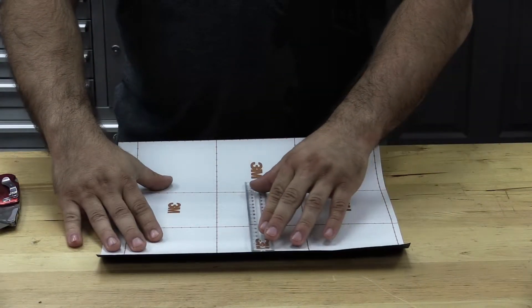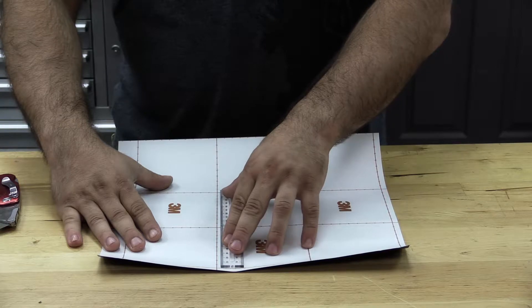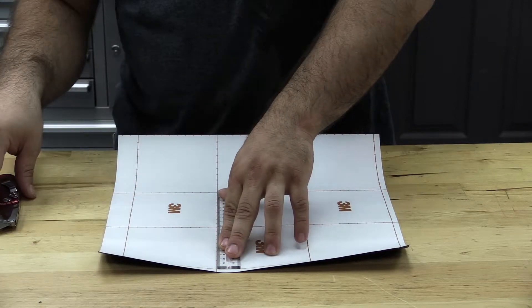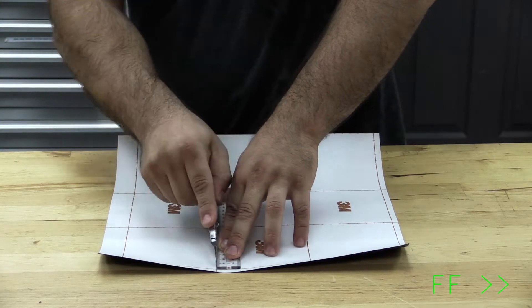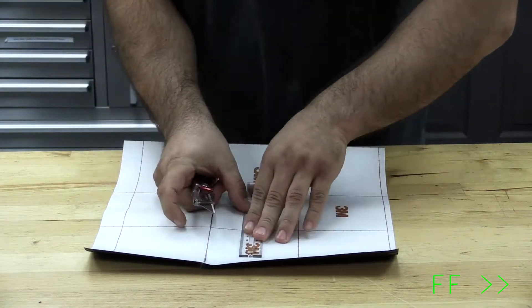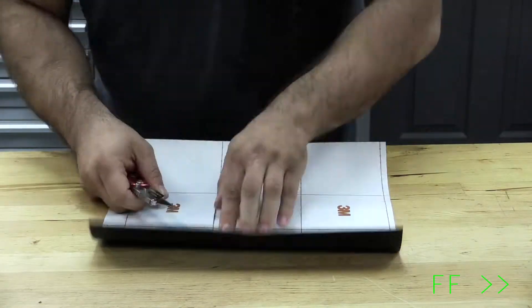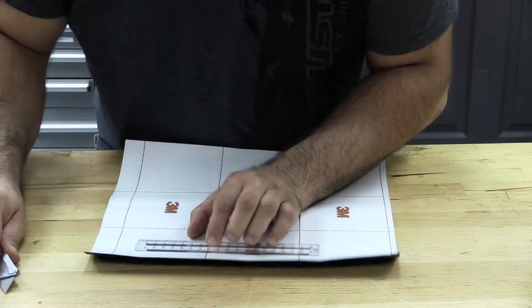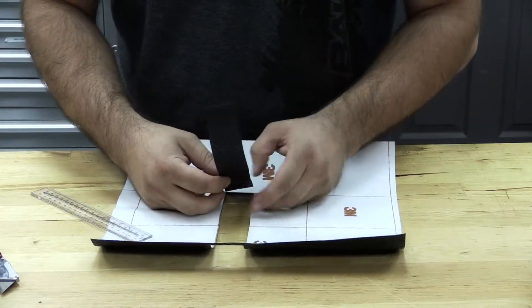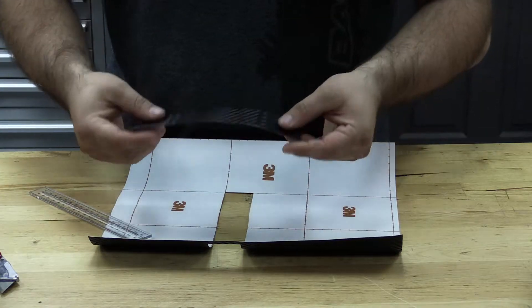So we're going to go ahead and flip our carbon fiber wrap upside down, and we'll use our straight edge to make our first cut, 20 centimeters. And we'll go ahead and separate our new piece. There we have it.